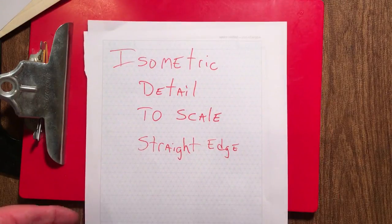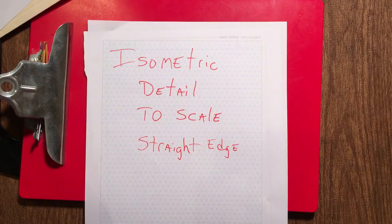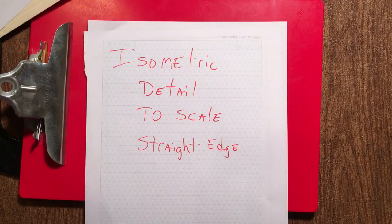Then we have an isometric drawing. It is on special paper. It is grid paper but the grids are at a 30 degree angle. This is going to be detailed. This needs to be to scale and you have to use a straight edge.